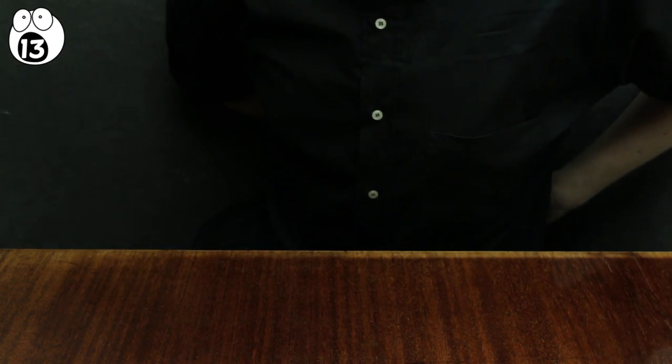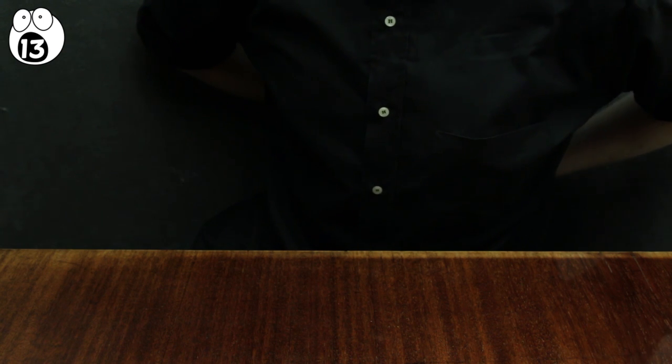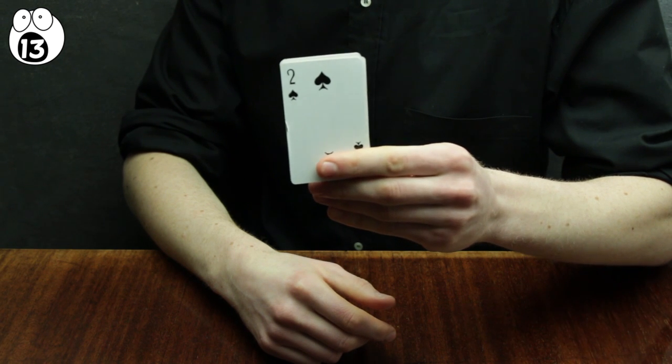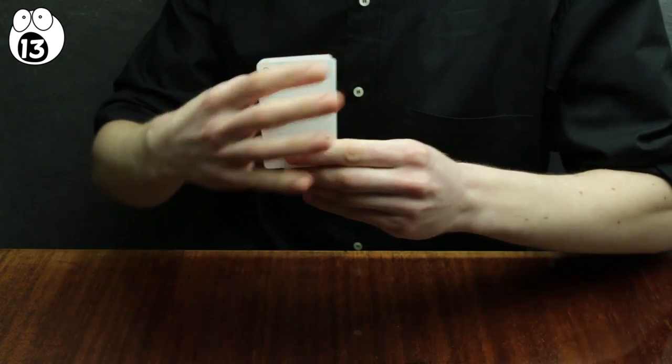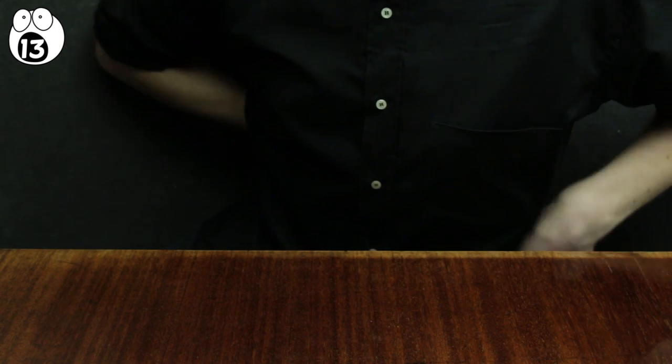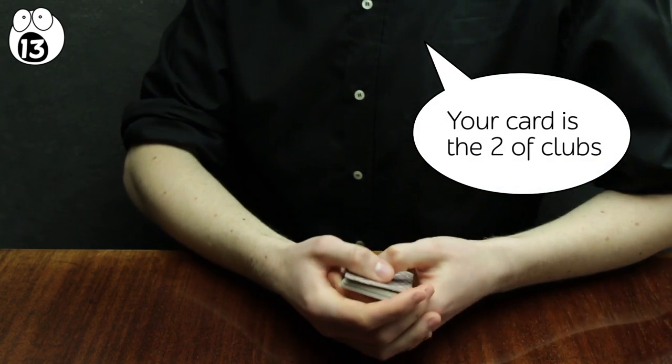Then the magician realizes that the magic shouldn't be done behind their back, so the cards are pulled back out, and he asks if the bottom card is the audience's chosen card. Obviously, they say the magician got it wrong. After which point, he puts the cards back behind his back and tells them what card they chose.